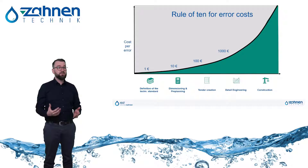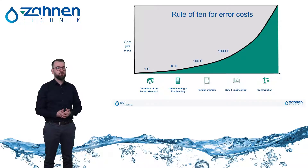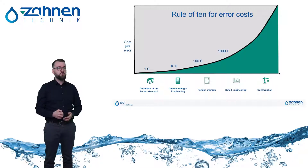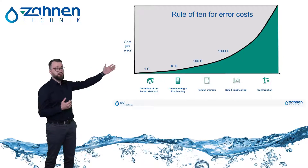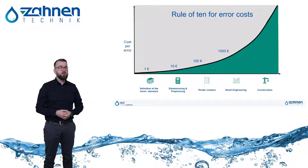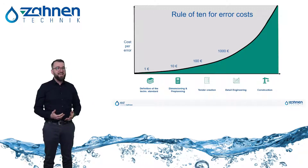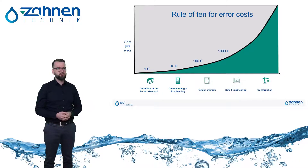Mistakes of this kind mean additional work and cost nerves, money and time. The rule of 10 for error costs states that the costs for error elimination increase by a factor of 10 with each project step. Consequently, mistakes should be detected as early as possible, or even better, not happen at all.